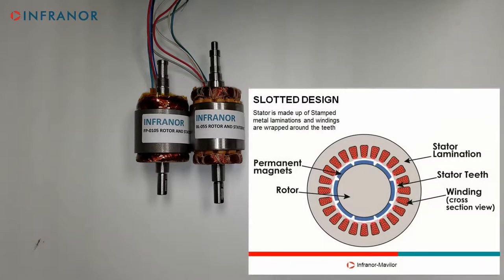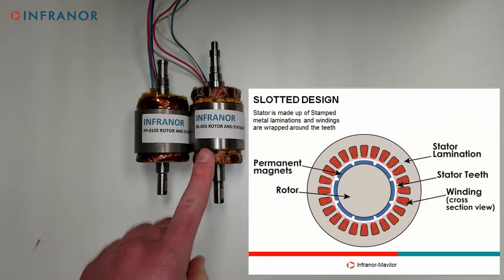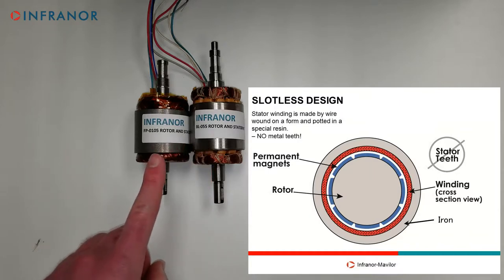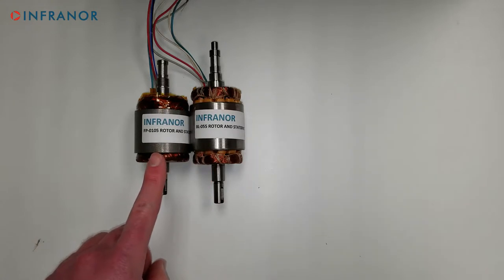The BL55 is our traditional slotted motor series. The FP105 is our no-cogging slotless motor series. Both kits fit into a 57mm frame size motor and have the same external stator diameter.